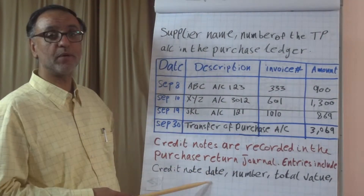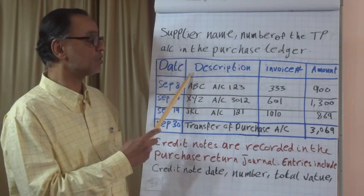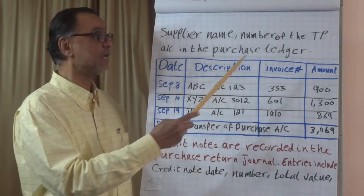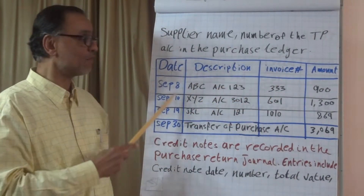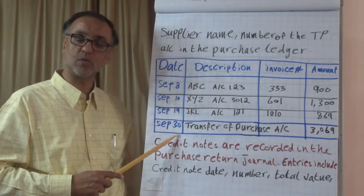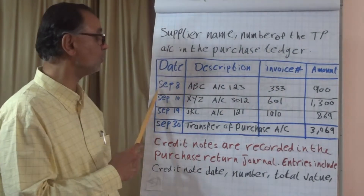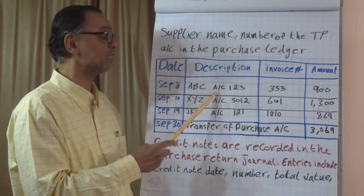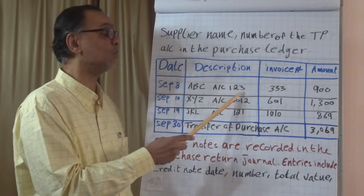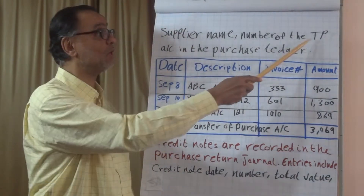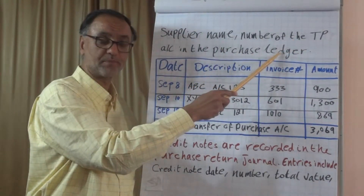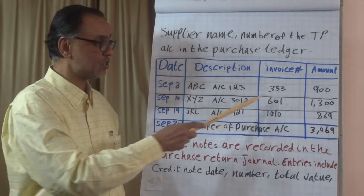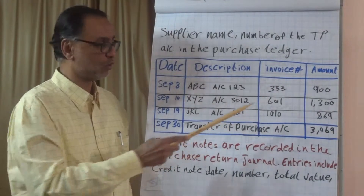Here is a sample of the purchase journal. We start with the date and description, which includes the name of the supplier and its account number, the invoice number, and the amount. The first transaction happened on September 8th from ABC company, whose account number is 123 — a trade payable account in the purchase ledger — with an invoice number of 1,300 and a purchase amount of $900.